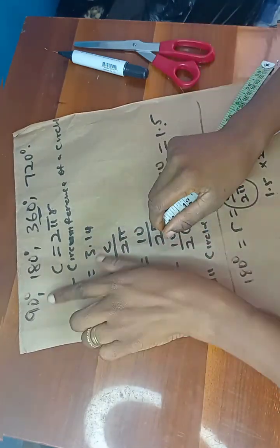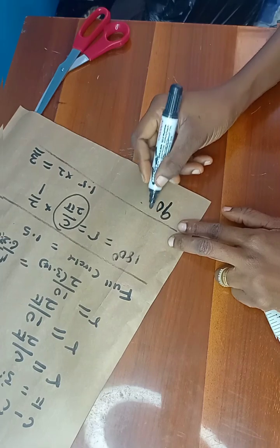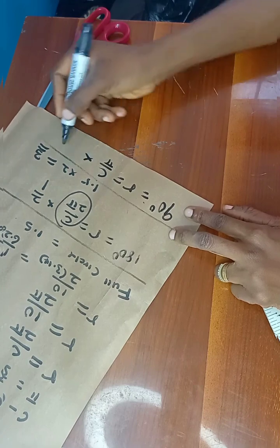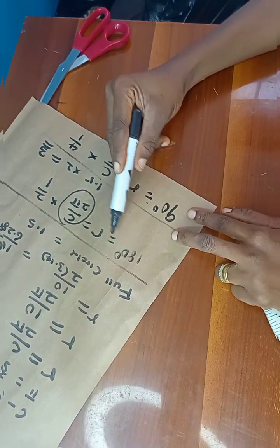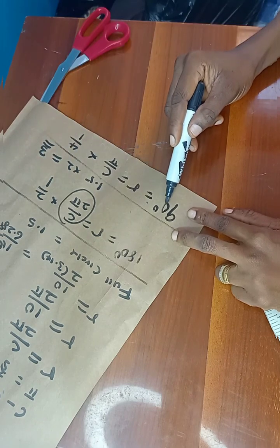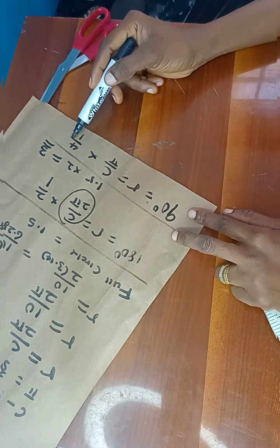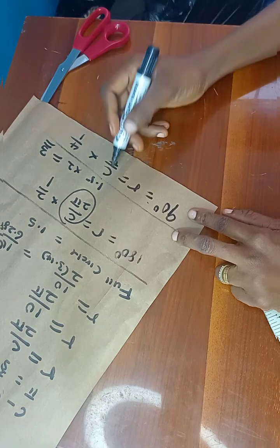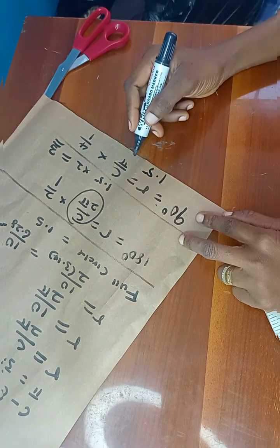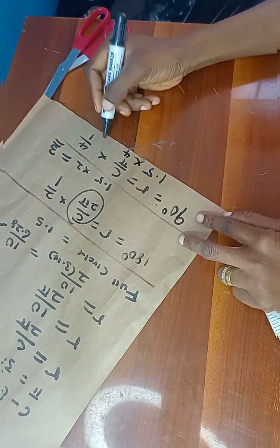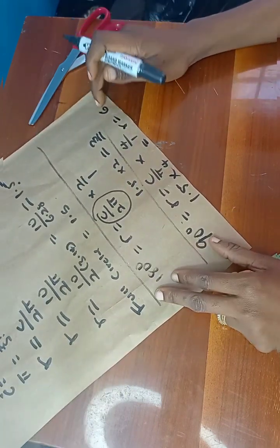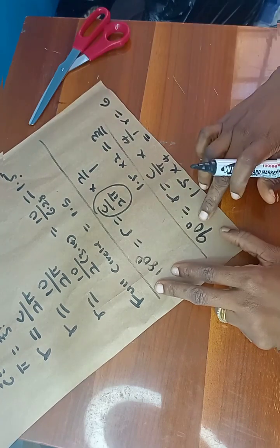Now we're moving on to cut a quarter circle — the 90-degree flare. When calculating for the 180-degree flare we multiplied by two over one, but now for the 90-degree flare we are multiplying by four over one. So 1.5 multiplied by four gives us a radius of six. We are now using this waist radius of six to cut our 90-degree flare.